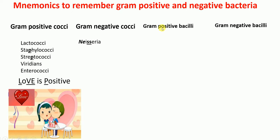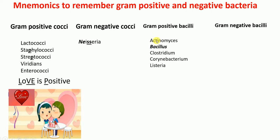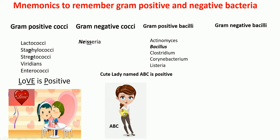Let's look at gram-positive bacilli first. In this list we have Actinomyces, Bacillus, Clostridium, Corynebacterium, and Listeria. The mnemonic to remember these gram-positive bacilli is: 'Cute Lady named ABC is Positive.'